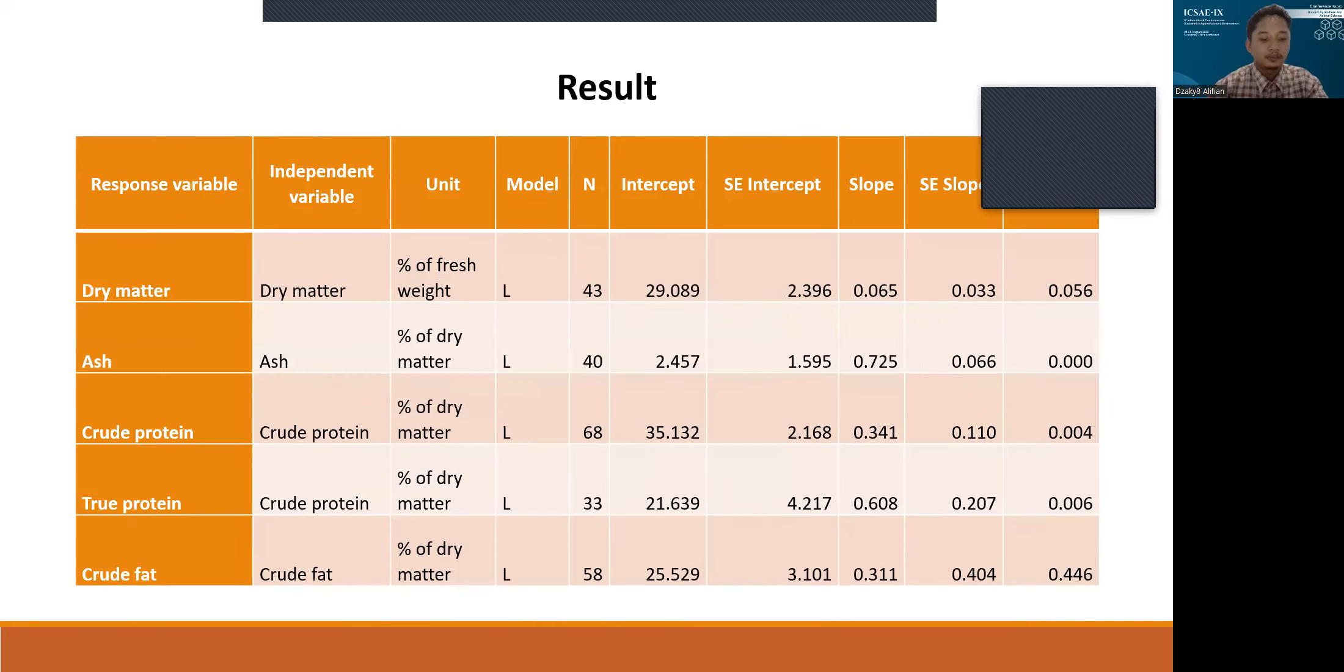The results of the meta-analysis are shown in Table 3. Dry matter substrate level had a tendency to increase dry matter in Hermetia illucens. Dry matter is one of the determinants of growth performance. The height of the dry matter content is also influenced by optimum water content, humidity, and ambient temperature.